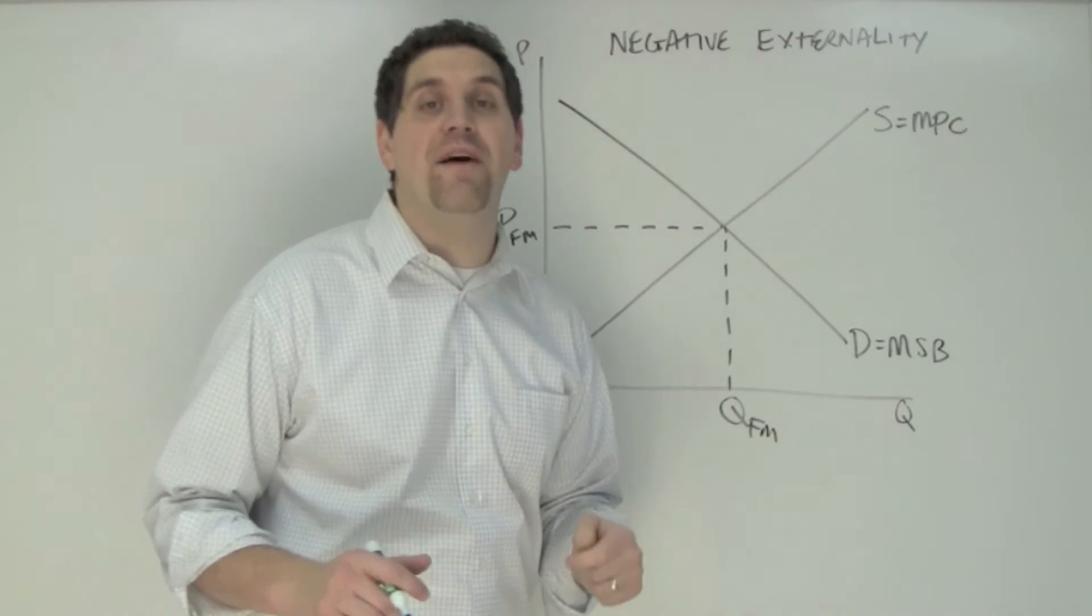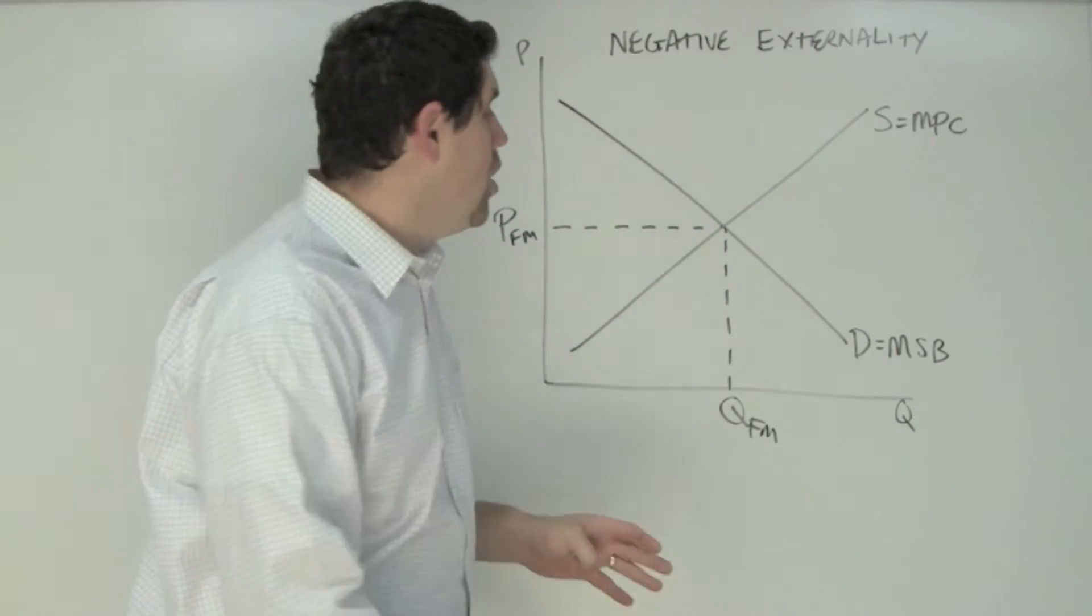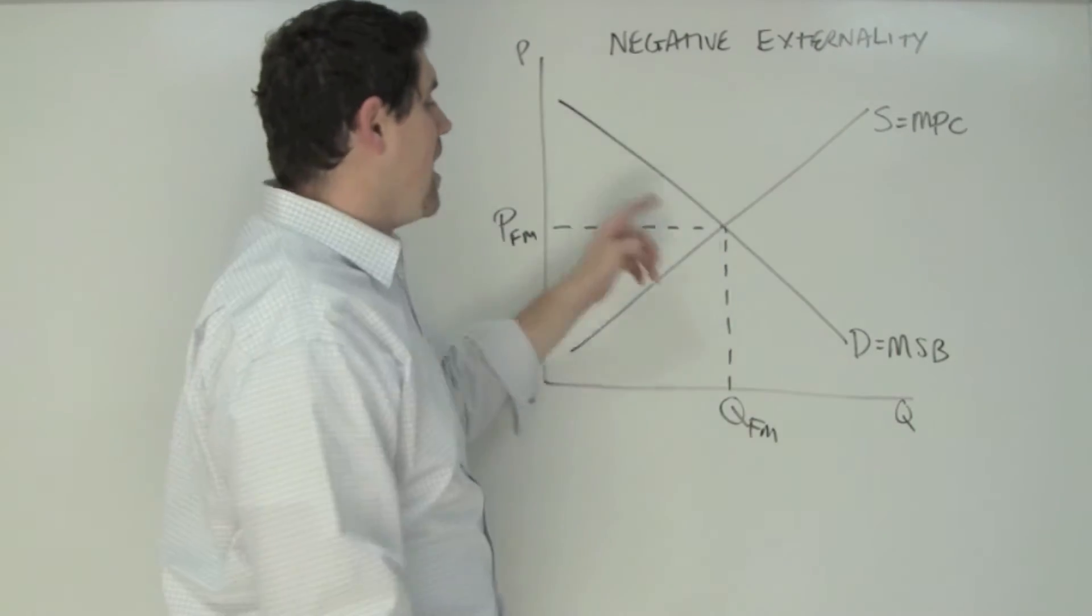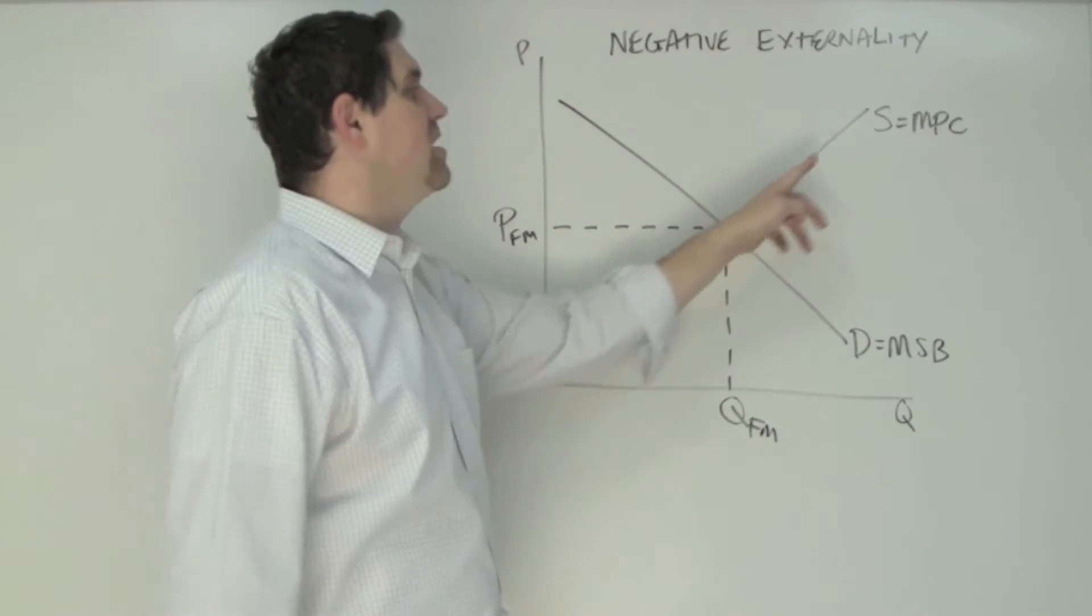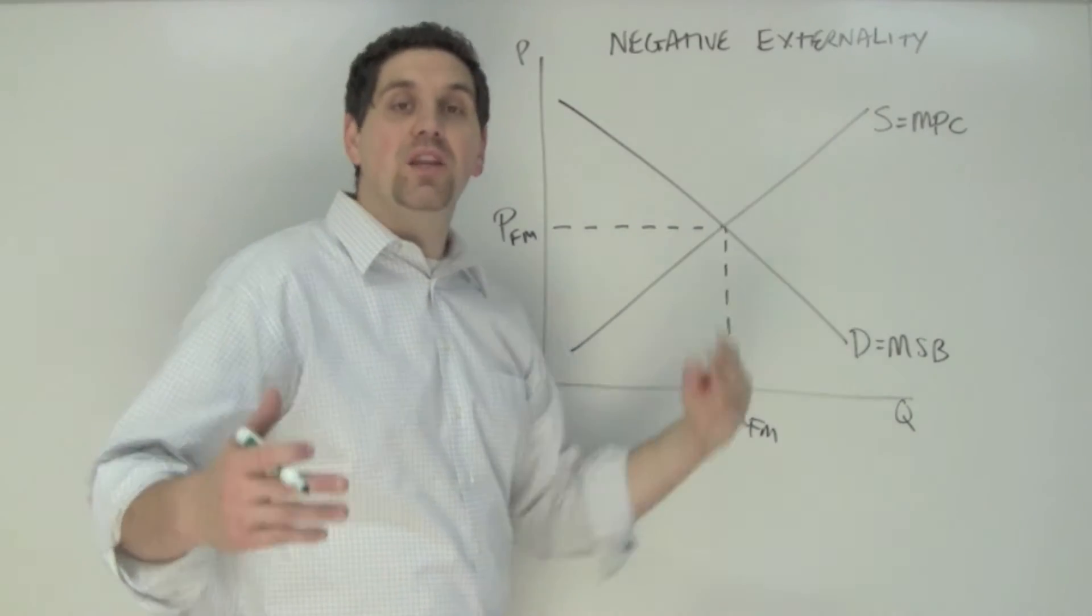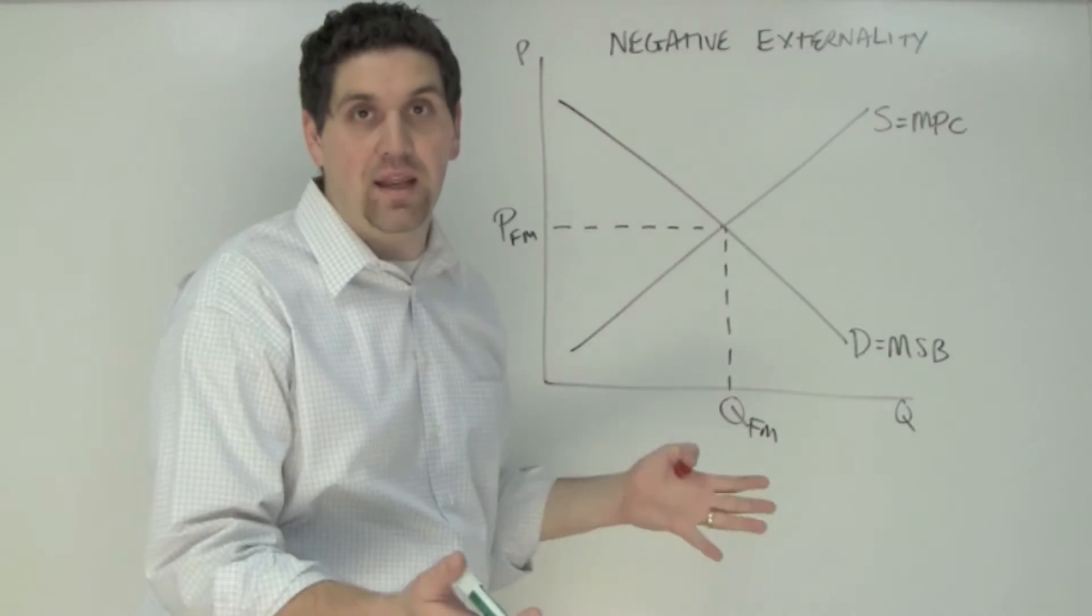Now to answer this question, let's look at the graph for a negative externality. We've got demand and supply. Demand represents the marginal social benefit to society. This supply curve represents the marginal private cost, ignoring the external cost to society.